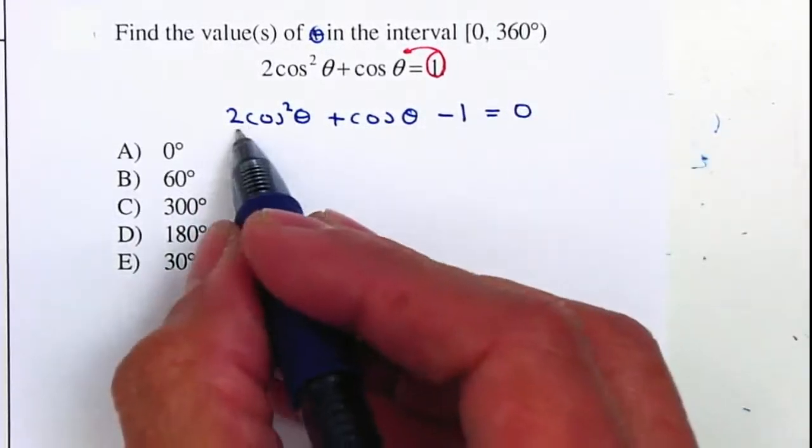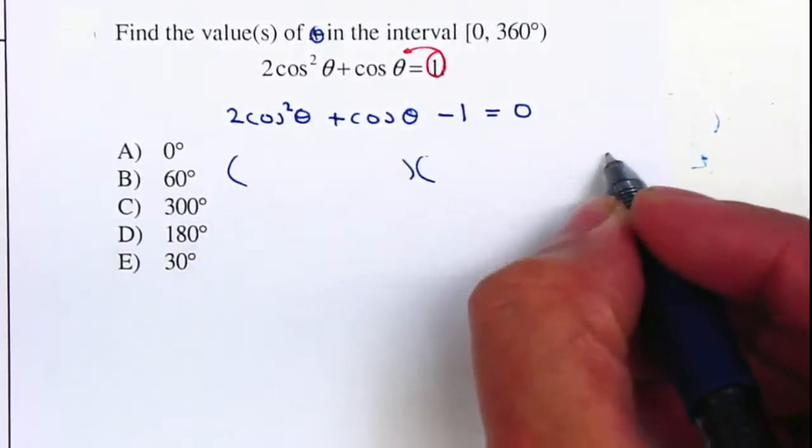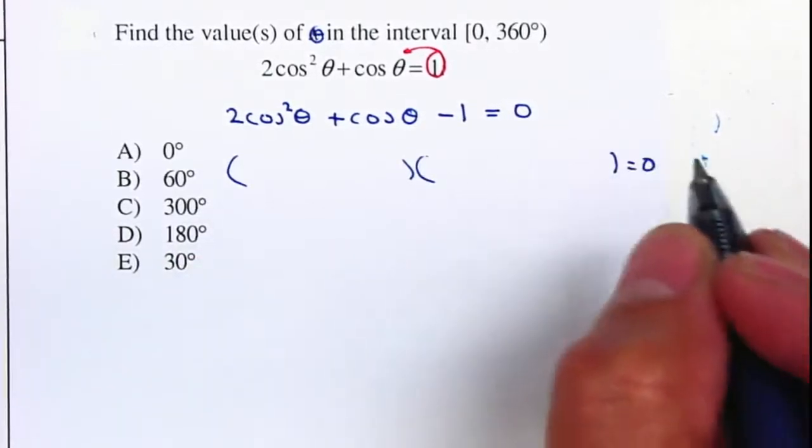Since we have a quadratic equation and we have three terms, we are going to factor this out. If we're not able to factor it, then we'll have to use the quadratic formula.